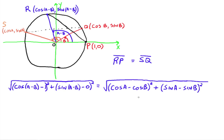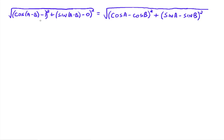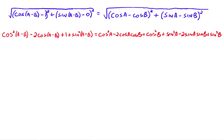Now we're going to do nothing but algebra. We can square both sides to remove the square roots. The term (cos(A−B) − 1)² is a binomial squared, so it expands to cos²(A−B) − 2cos(A−B) + 1. Then sine of A minus B minus zero squared gives us plus sin²(A−B). On the right side, (cos A − cos B)² expands to cos²A − 2cosA cosB + cos²B, and (sin A − sin B)² expands to sin²A − 2sinA sinB + sin²B.